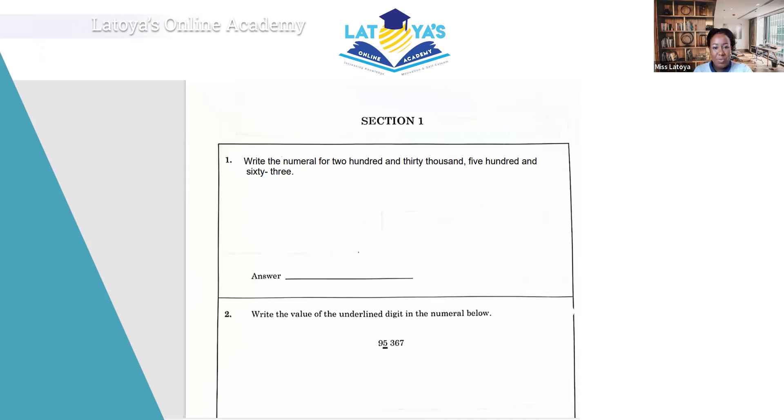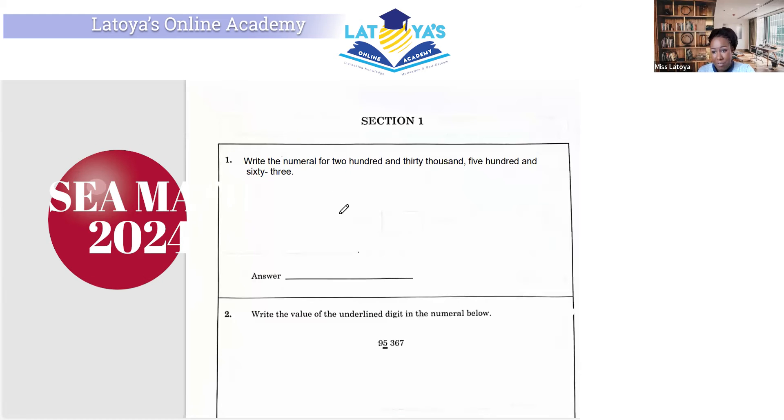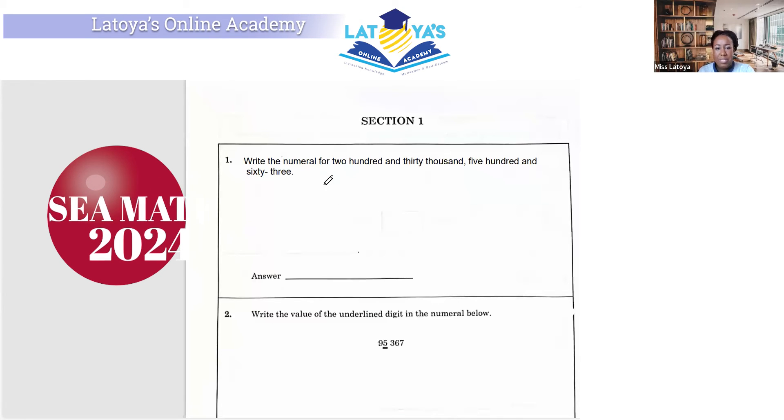The first question reads, write the numeral for 230,563. Now, my recommendation for this, for those of you who may have problems with this question, is to write your place values above.